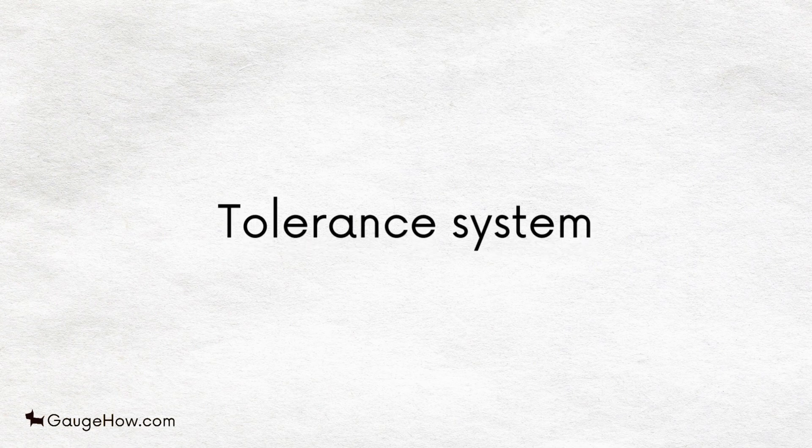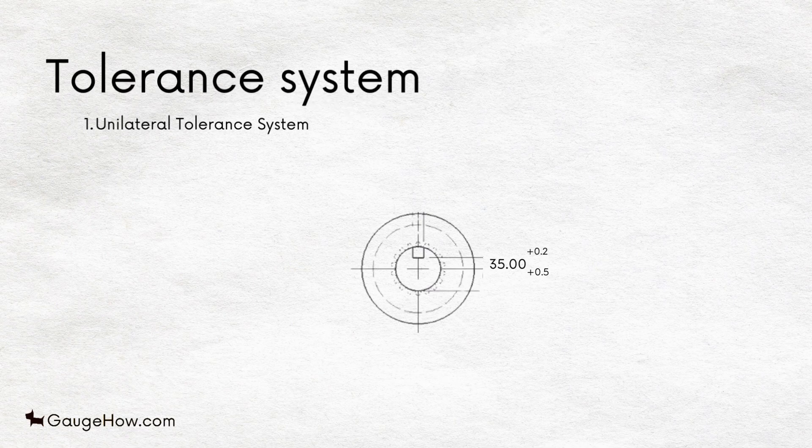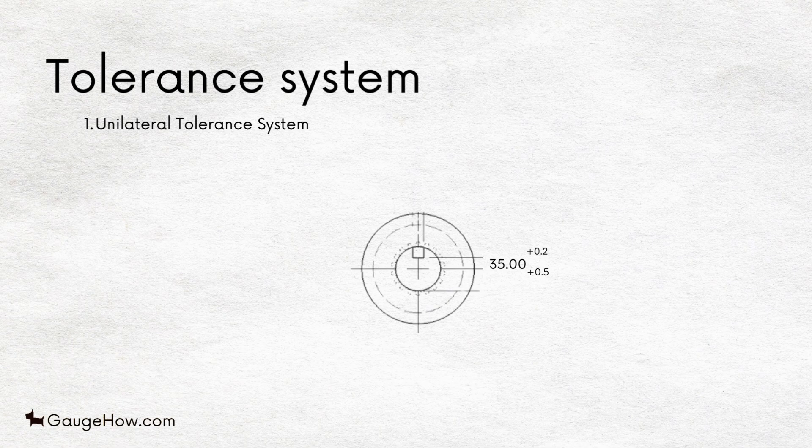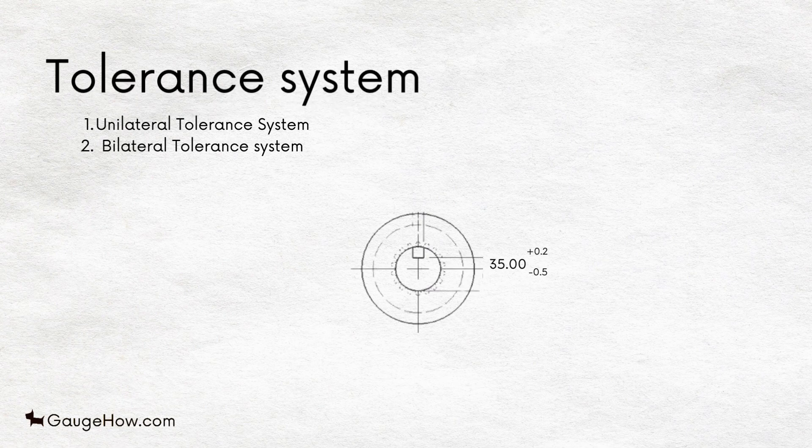The tolerance on dimensions can be specified in three ways. Unilateral Tolerance System: In this system, the tolerance is provided in only one direction from the basic size. For example, 35.00 +0.2 +0.5.